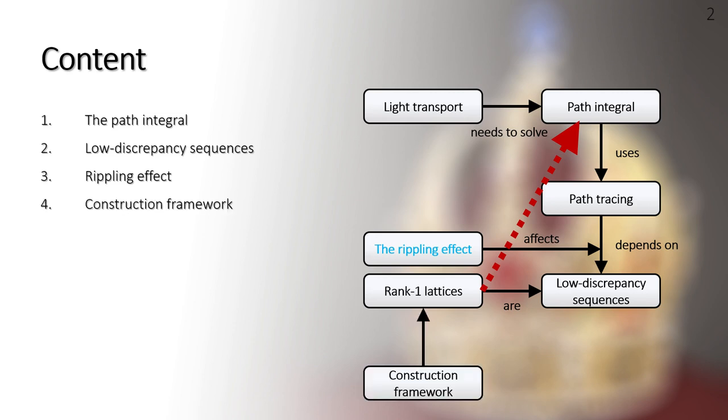In the fourth part, we will demonstrate the framework to build rank 1 lattices by recursively permuting the preliminarily selected components. Finally, we will present our experiment results. The results support the proof of concept that rank 1 lattices are worthy candidates in solving the path integral and verify the influence of rippling effect between path tracing and low discrepancy sequences. The future work based on this discovery will be followed.